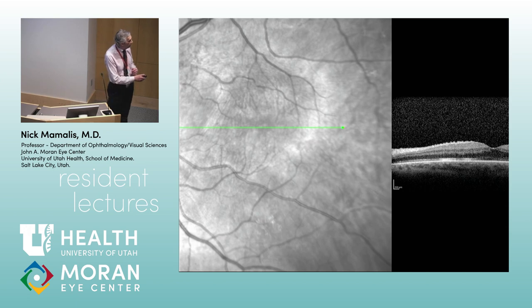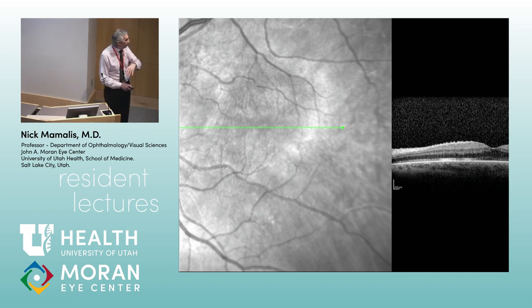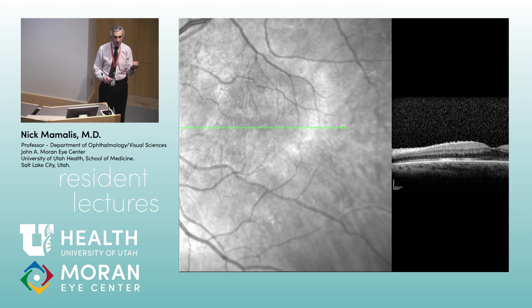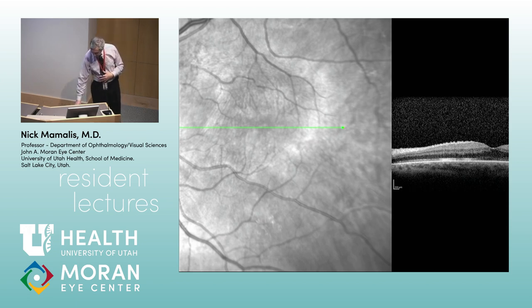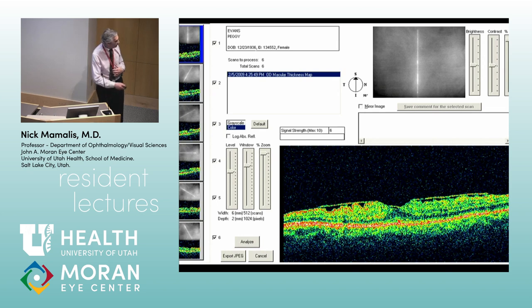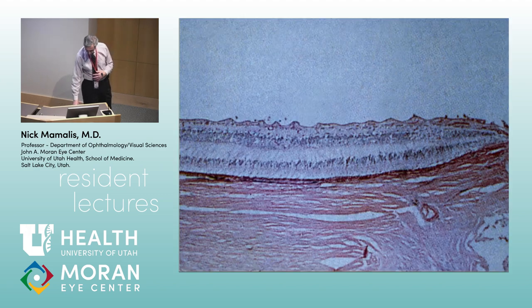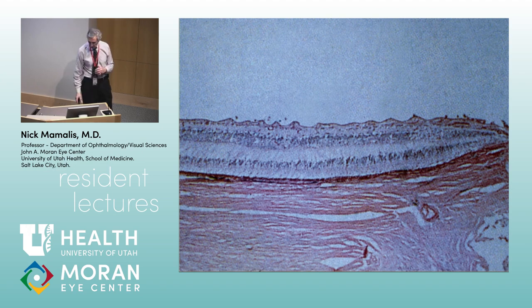On OCT you can see the little wrinkling on the surface. Epiretinal membranes are thought to be due to astrocytes — another cell that can live in small numbers in the retina. Once they gain access to the surface of the retina in front of the internal limiting membrane, they can proliferate there and cause this epiretinal membrane to form. OCT shows the membrane very nicely. The path specimen also shows wrinkling on the retinal surface.